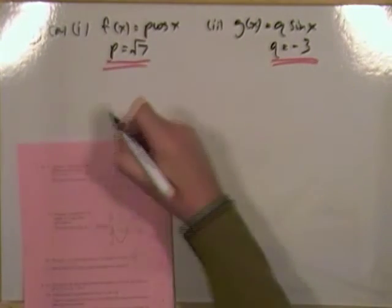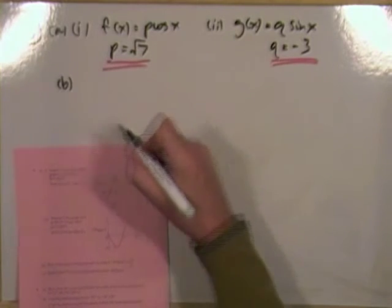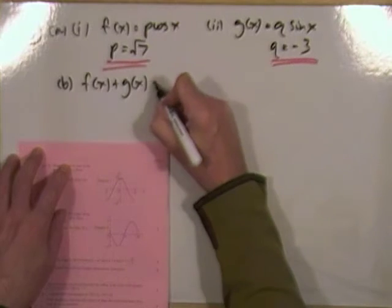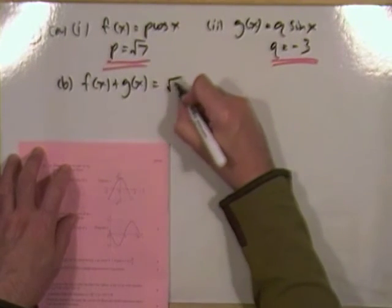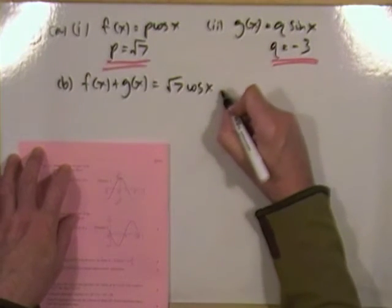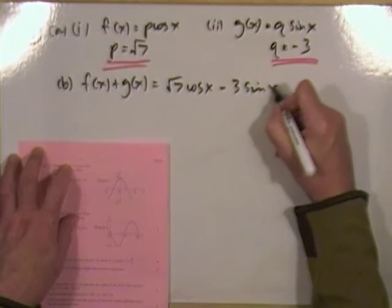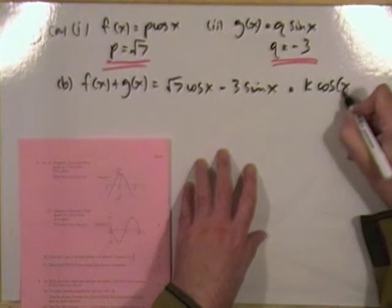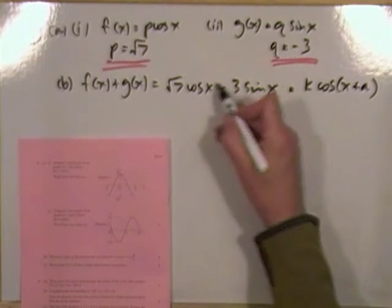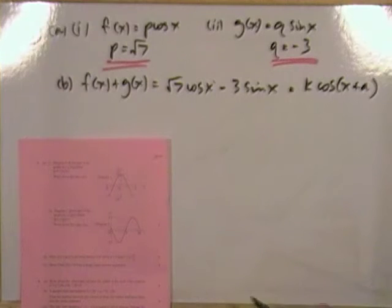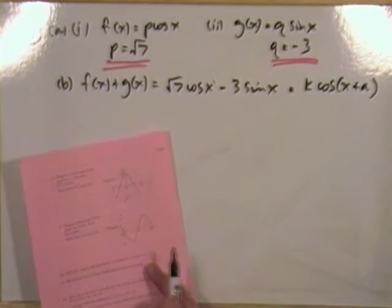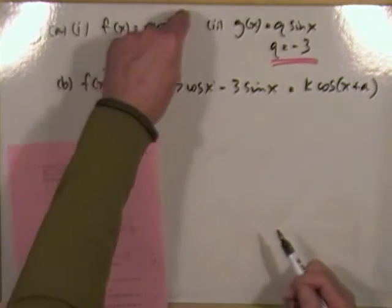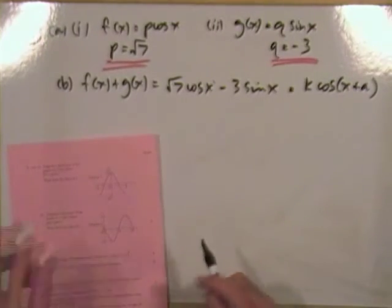Part 2: write f of x plus g of x. That would be root 7 cos x minus 3 sine x, and write it in the form k cos(x + a). There are no degree signs anywhere — this question is in radians, which is confirmed throughout.